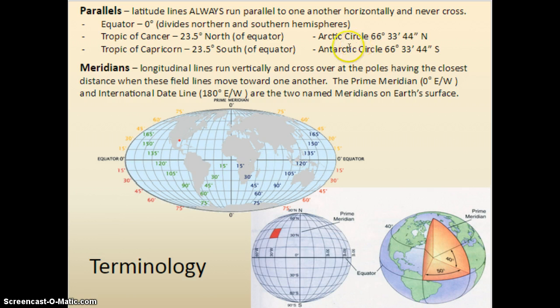There's also the Arctic and Antarctic circles. The Arctic circle is 66 degrees, 33 minutes, and 44 seconds north, and the Antarctic circle is 66 degrees, 33 minutes, and 44 seconds south.